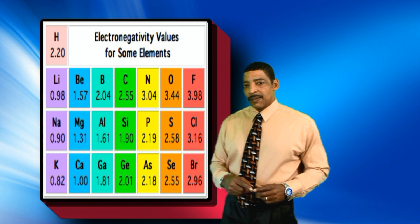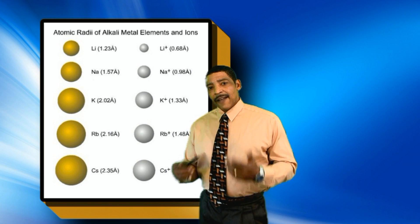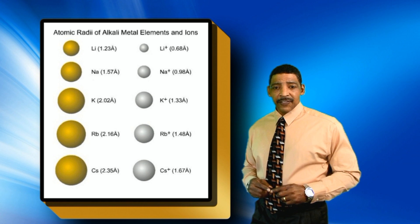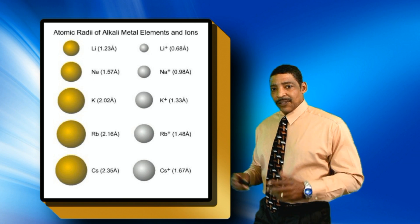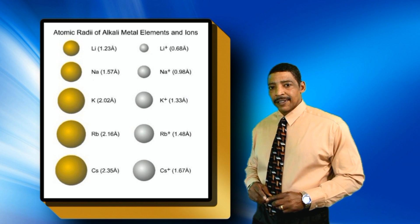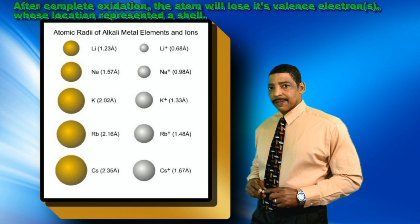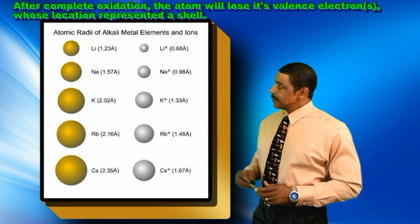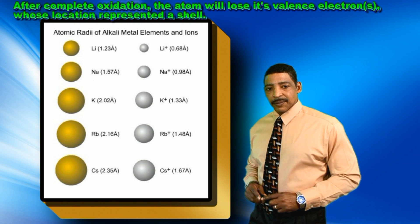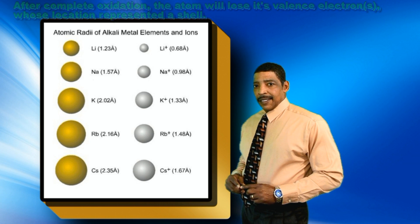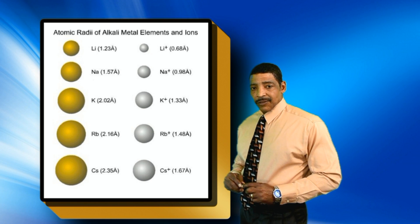Another important point about oxidation and reduction is that after the oxidation process, the resulting positively charged ion, known as a cation, will have a smaller radius than the original atom. For example, the lithium atom has a radius of 1.23 angstroms, while the lithium ion has a radius of 0.68 angstroms.